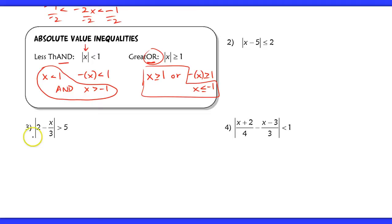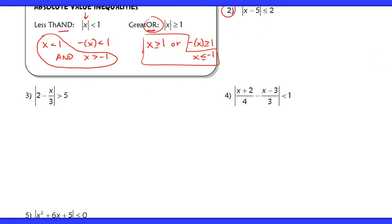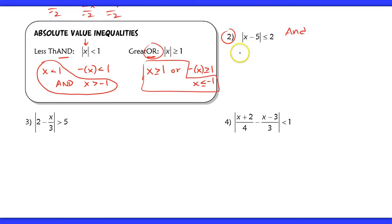So like, for example, in number 2 back here, I'm going to set up two cases. So this is a less than problem. So this is an AND. And we're going to set up x minus 5 is less than or equal to 2. And the alternate equation here, the opposite of x minus 5 is less than or equal to 2.